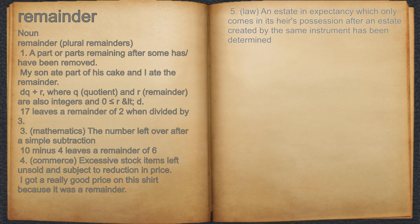5. Law: an estate in expectancy which only comes into its heir's possession after an estate created by the same instrument has been determined.